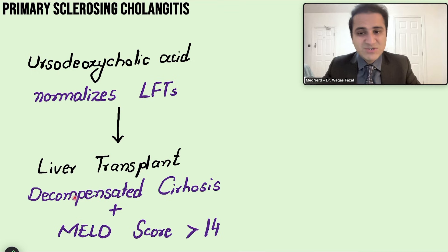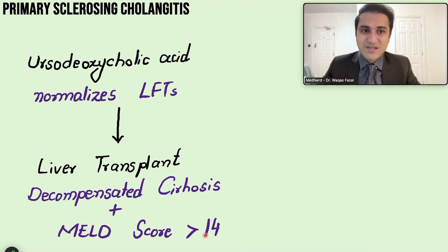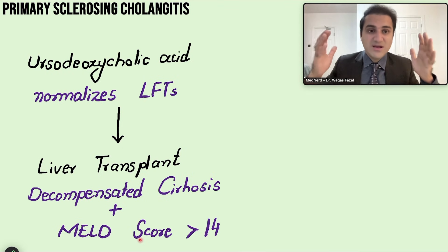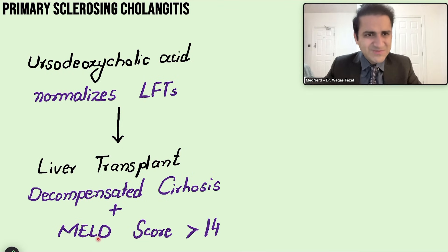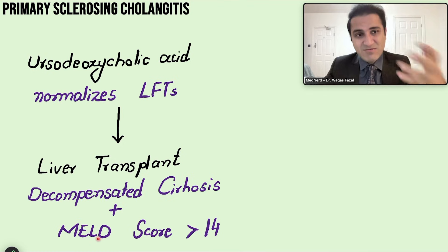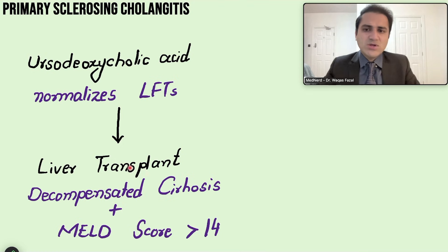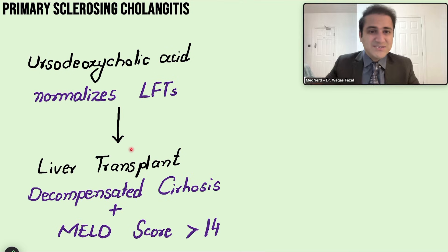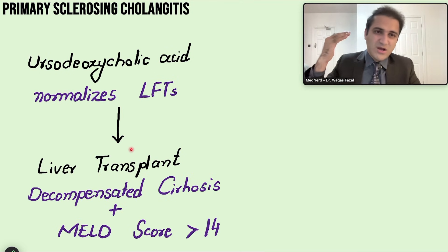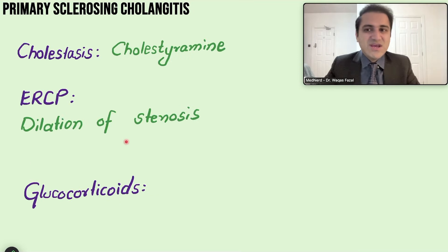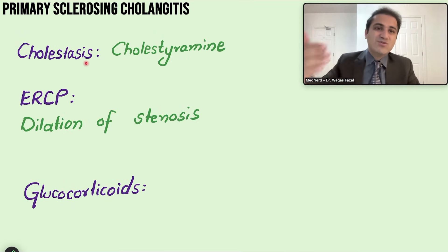The mainstay of treatment in primary sclerosing cholangitis is liver transplant, performed in patients with decompensated cirrhosis or a MELD score greater than 14. Outside of transplant, management is largely symptomatic — normalizing liver function tests with ursodeoxycholic acid where possible.